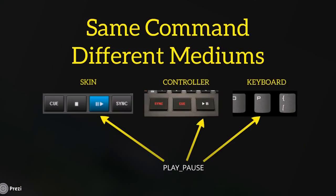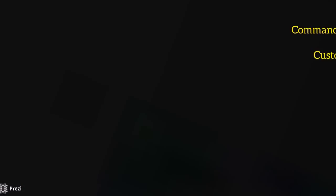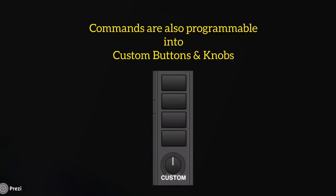The same commands can be used with different mediums. For example, play/pause can be used on the skin, the controller, and the keyboard — it's pretty universal. So if you've made a command you like on one system, you can program it into the skin, a controller, or map it to your keyboard. Virtual DJ 8 also has custom buttons and a custom knob, which makes testing out new ideas really easy.